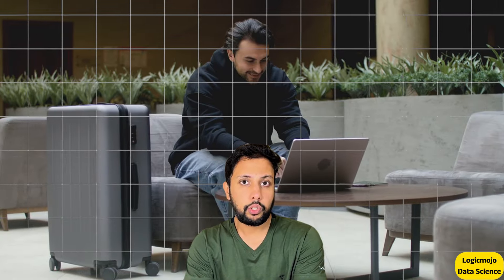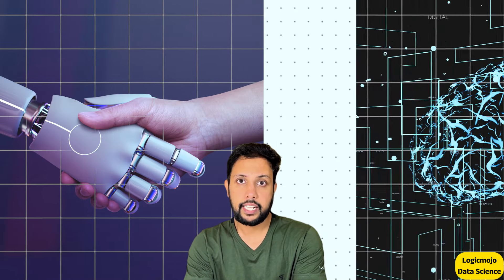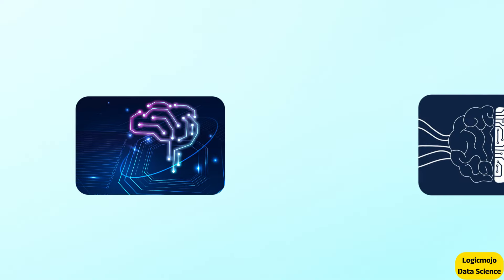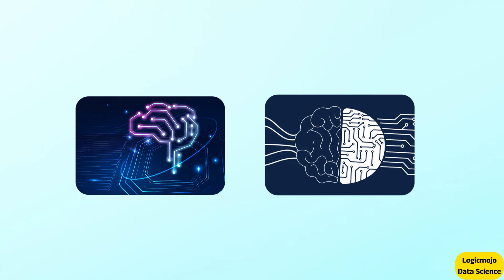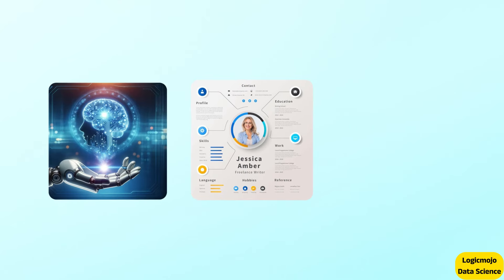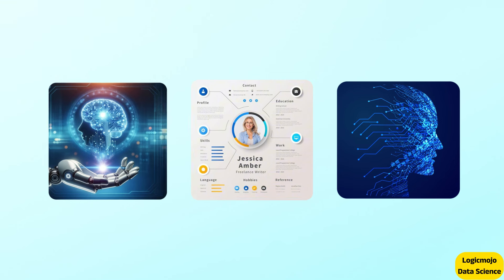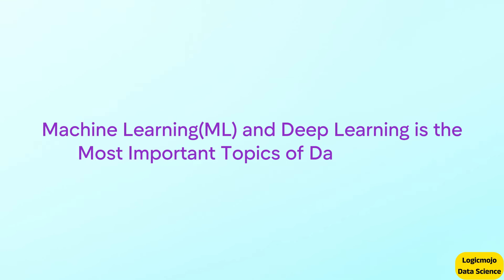So you need to work on a good set of projects which involves machine learning and deep learning. Machine learning and deep learning is the most important topic in data science, and in your resume, machine learning and deep learning based projects are very important to get a call for the data scientist role. The machine learning is the most important topic in data science itself, so your project must include ML projects which involve a diverse set of topics.